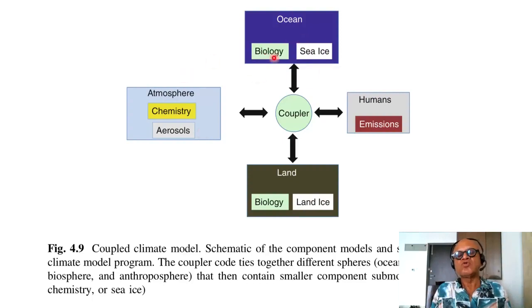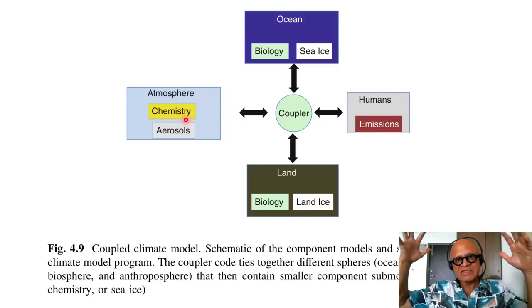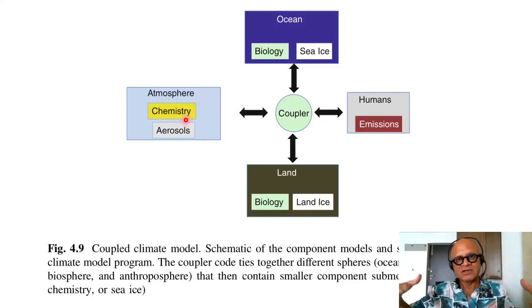Ocean may include biology, sea ice. Atmosphere would include chemistry and aerosols, which affect directly the radiation balance, the so-called direct effects, or indirectly the cloud microphysics. And land, of course, has biology and land use as well.